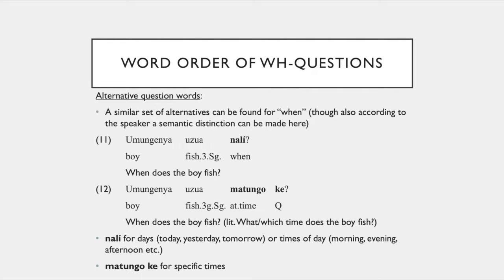A similar set of alternatives can also be found for 'when', and this time Nico actually said there is a difference. When you ask 'when does the boy fish?', 'umungenya usuwa nali' uses the word 'nali' for 'when'. The other version, 'umungenya usuwa matungo ke', literally means 'which time does the boy fish?' He told me that 'nali' is for days like today, yesterday, and tomorrow, or times of day like morning, evening, and afternoon, while 'matungo ke' is more for specific times.